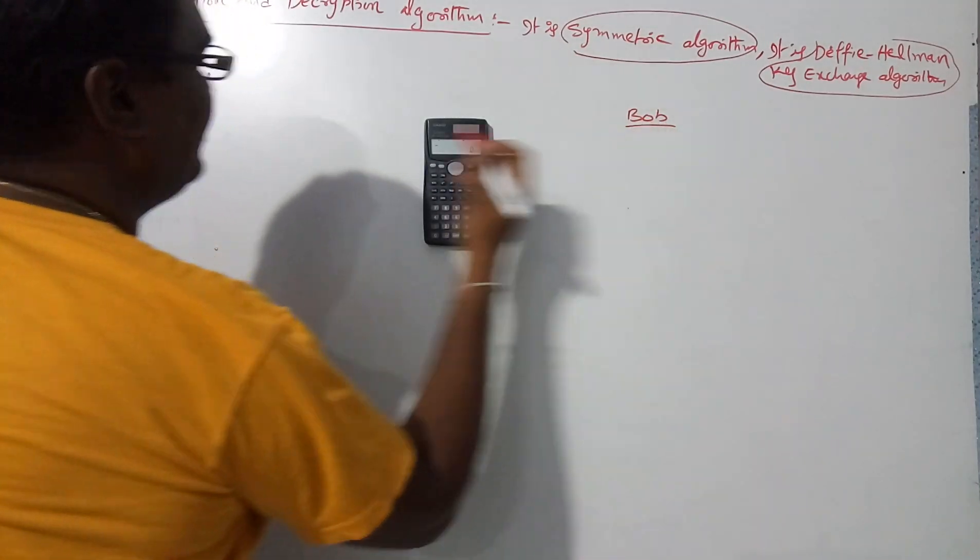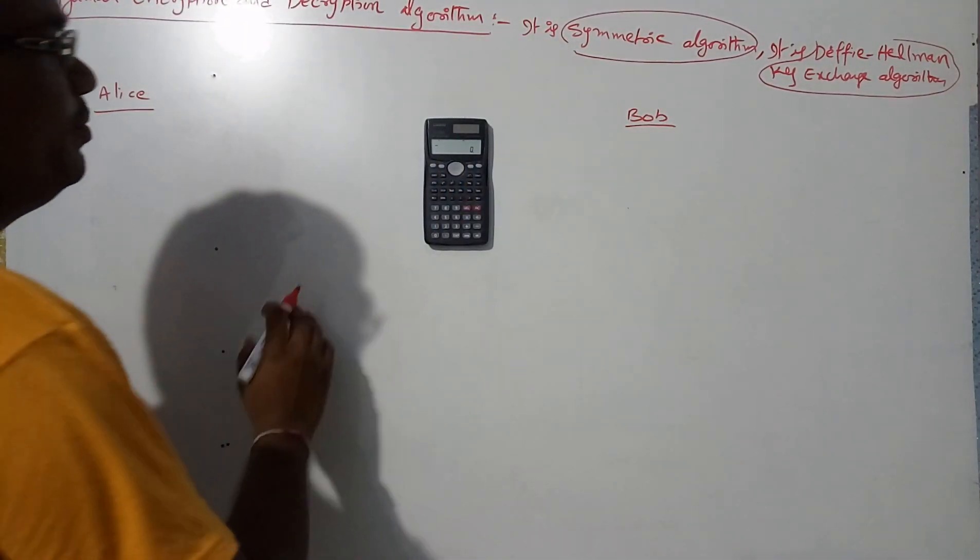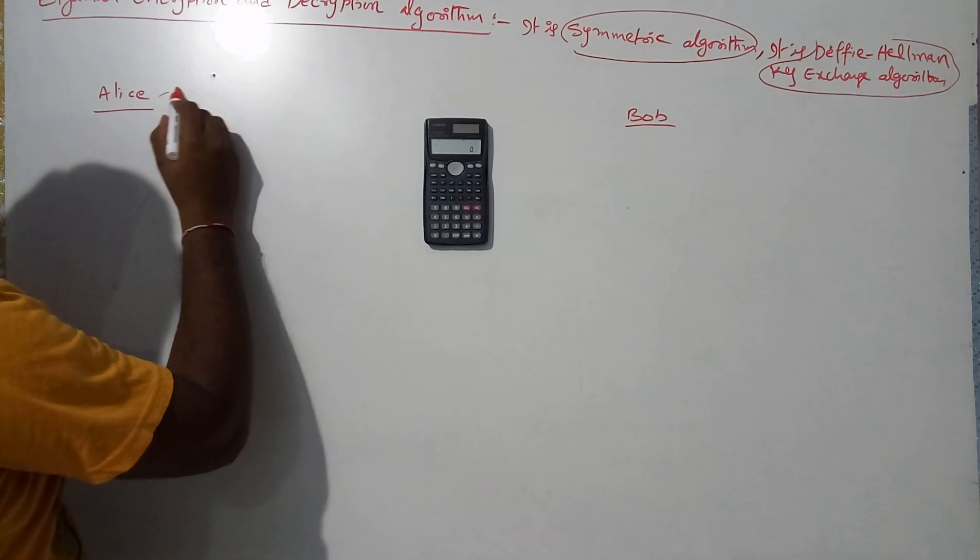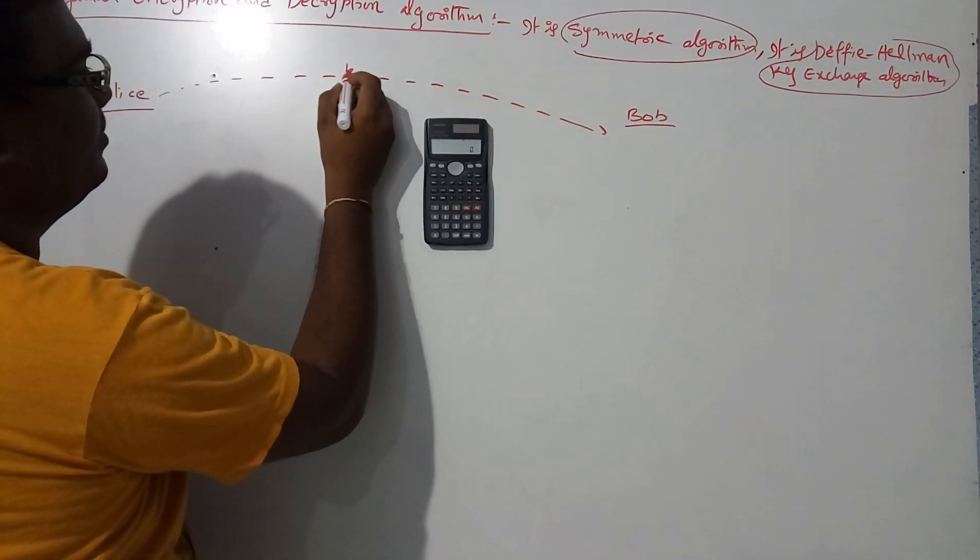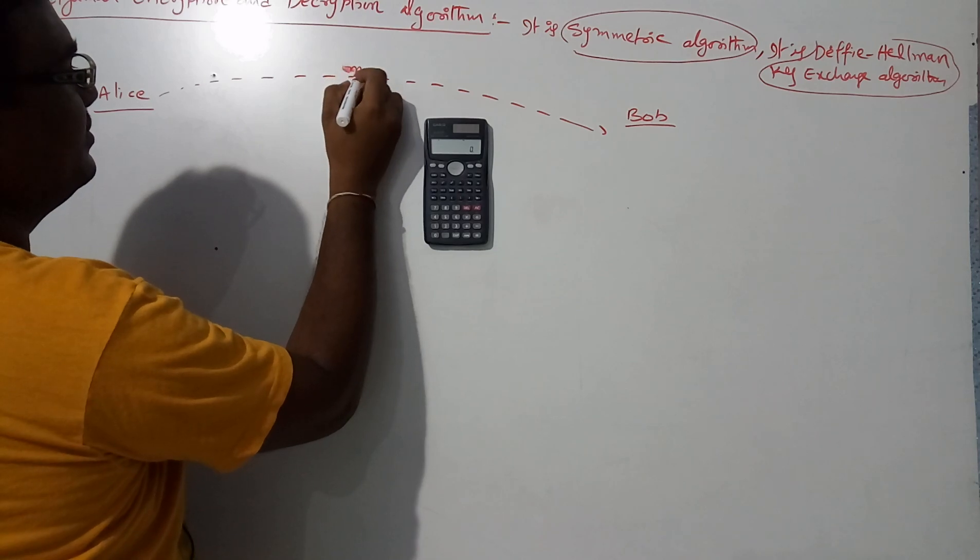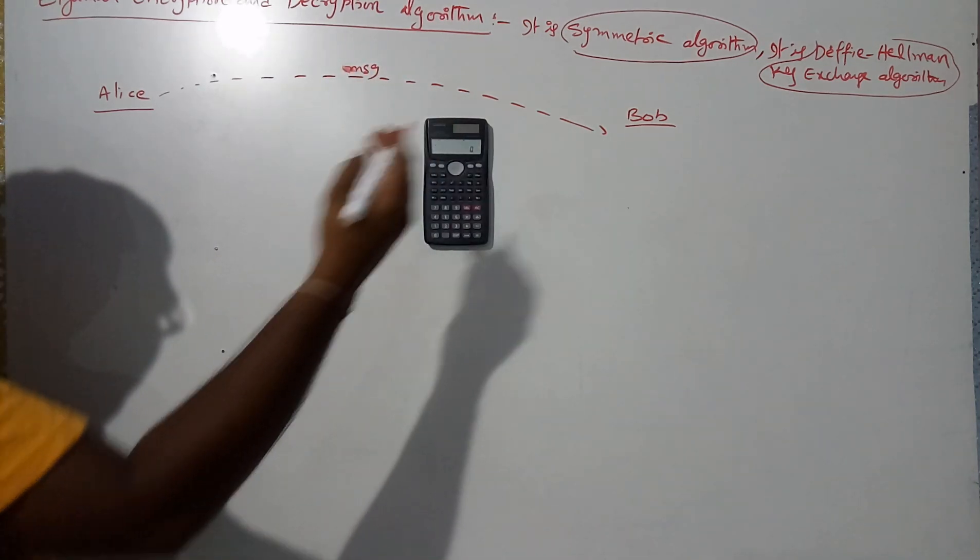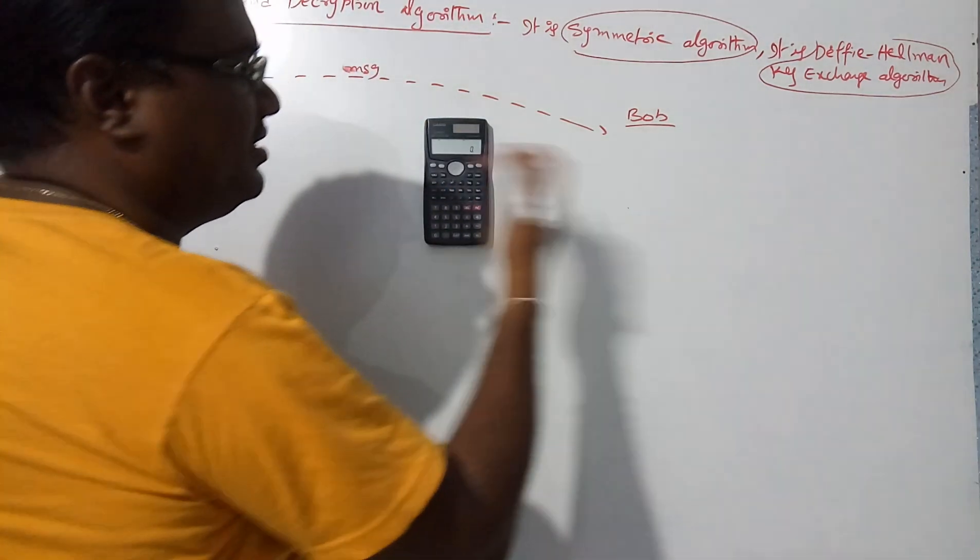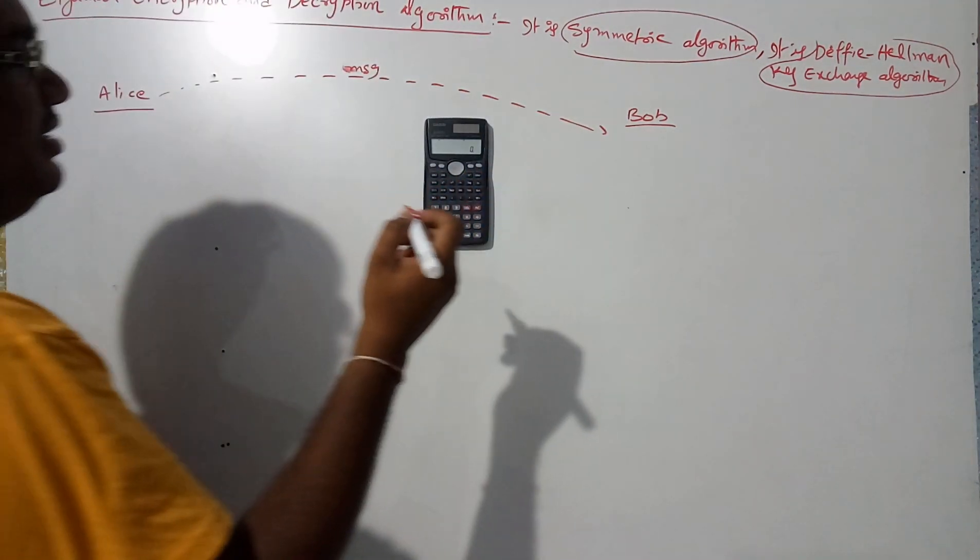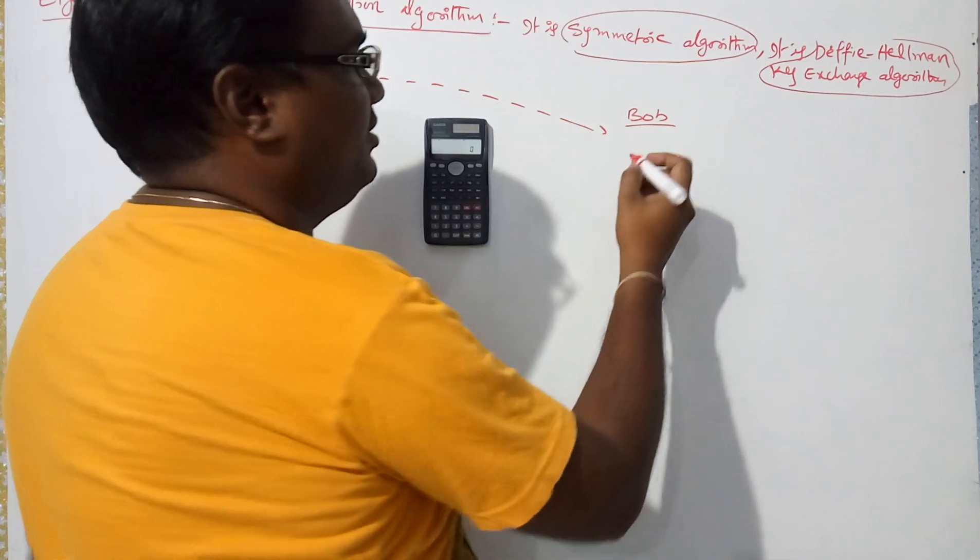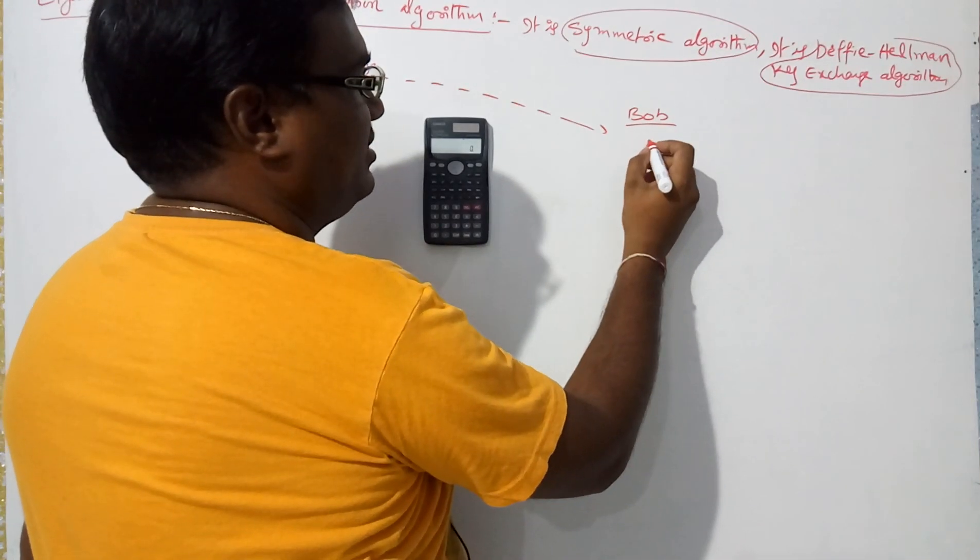Suppose two parties: Alice and Bob. Alice sends a request to Bob to send a message. Bob sends his public information to Alice. Bob has public information like this.